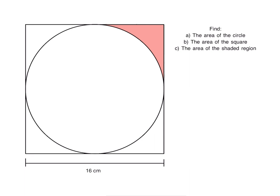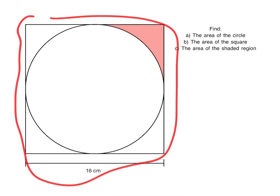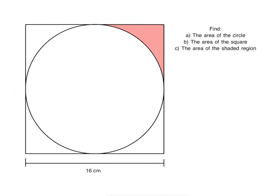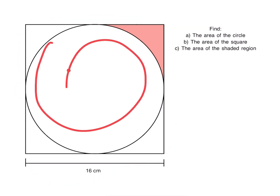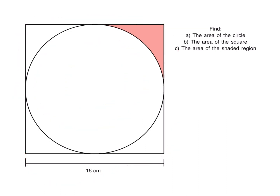Today we're going to be solving this geometry problem where we're looking for the area of the square around the outside, the area of the circle in the center, and we're also going to find the area of this region up here in the top right section of the shape. So let's get started.